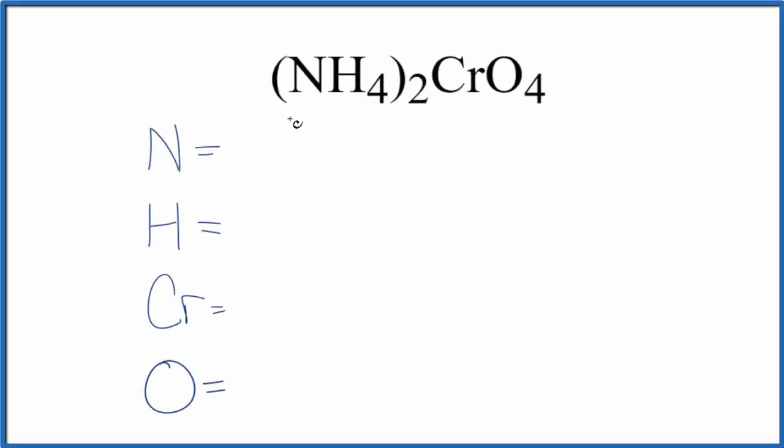Let's find the number of atoms in (NH₄)₂CrO₄. This is called ammonium chromate. The ammonium ion, NH₄, has an ionic charge of 1+, and the chromate ion has a charge of 2-. So we need 2 times 1+ to balance out the 2-.